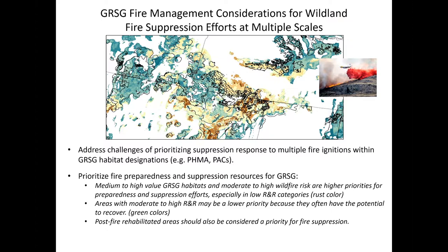The assessment can also help prioritize fire preparedness and suppression resources. Areas with medium to high value greater sage-grouse habitat and moderate to high wildfire risk should be higher priorities for preparedness and suppression efforts, especially those in lower resilience and resistance categories shown in red. Areas with moderate to high resilience and resistance, shown in green, may be a lower priority because they often have the potential to recover naturally without intervention. Post-fire rehabilitated areas should also be considered a priority for fire suppression to protect those restoration investments.